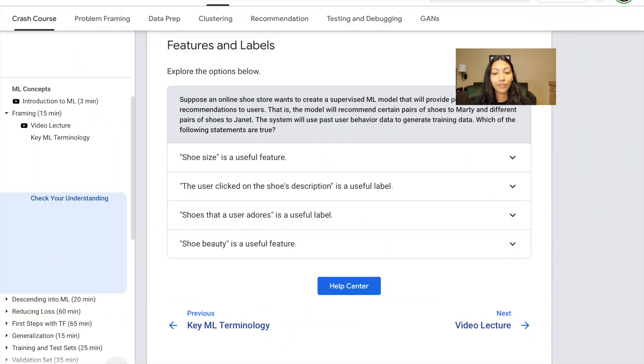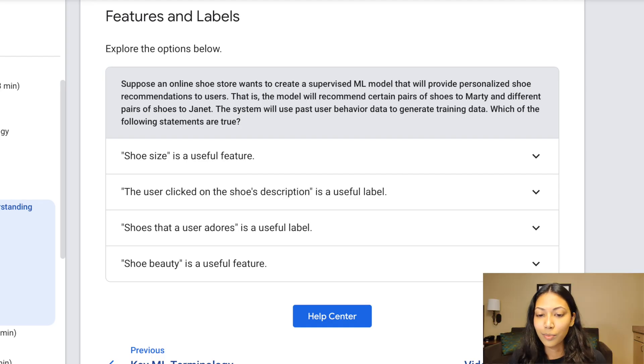In the last video we talked about machine learning terminology such as features and labels, supervised learning, classification, regression, etc. And we ended off with this quiz which now let's actually look at. Suppose an online store wants to create a supervised ML model that will provide personalized shoe recommendations to users. The model will recommend certain pairs of shoes to Marty and different pairs to Janet. The system will use past user behavior data to generate training data. Which of the following statements are true?